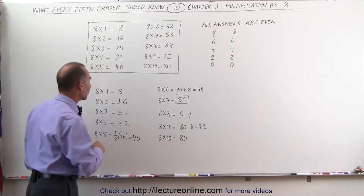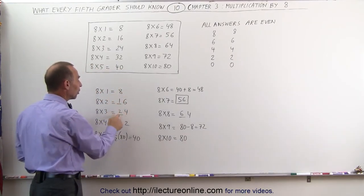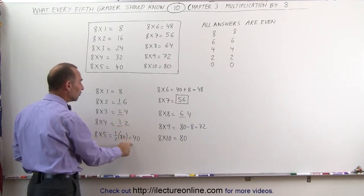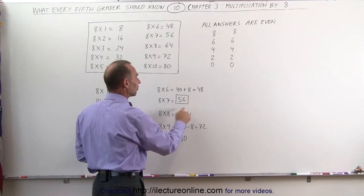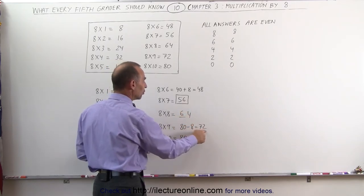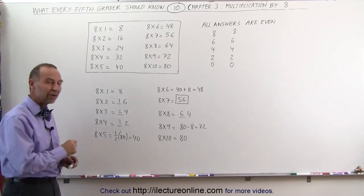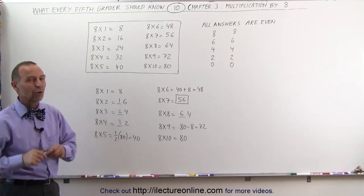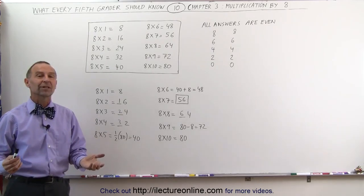Always remember that the number in the front, we have 8, now we have a 1 and a 6, a 2 and a 4, a 3 and a 2, and a 4 and a 0. Here we have a 4 and an 8, a 5 and a 6, a 6 and a 4, a 7 and a 2, and an 8 and a 0. The pattern is always there, and if you see the patterns in numbers and math, math is a whole lot easier for us. So that's how we deal with multiplication times 8.